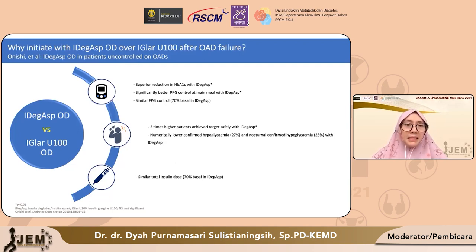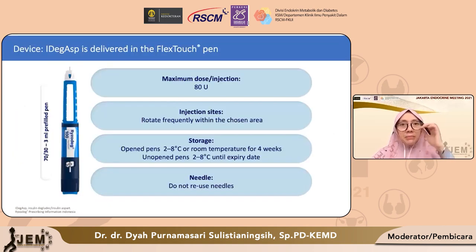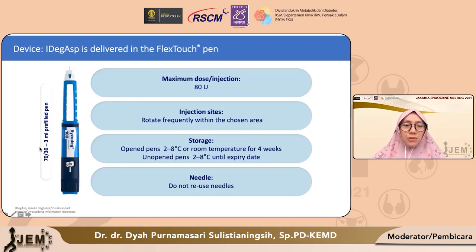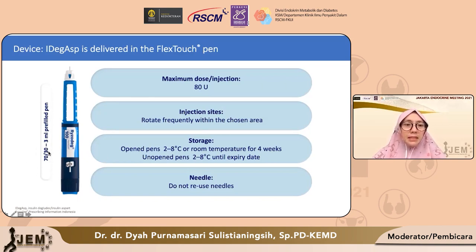Inilah bentuk insulin IDeg-Aspart yang kita sebut dengan Ryzodeg. Ryzodeg ini terdiri dari 70% insulin degludek yang merupakan insulin ultra long acting yang berfungsi sebagai basal insulin, dan 30% insulin Aspart yang berfungsi sebagai prandial insulin.